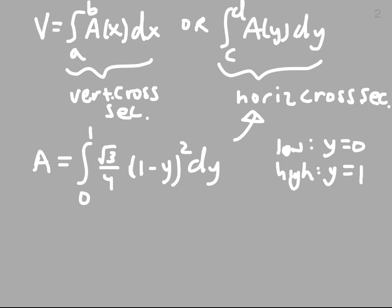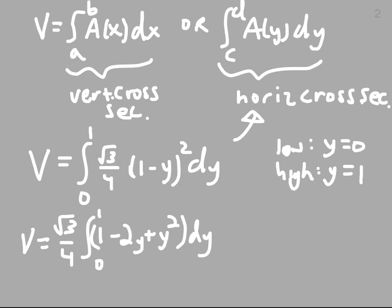We can pull the constant out, root 3 over 4. And then, we go ahead and multiply out 1 minus Y, quantity squared, and get 1 minus 2Y plus Y squared, DY. That's our volume V.